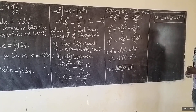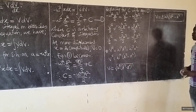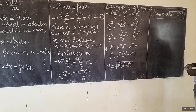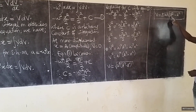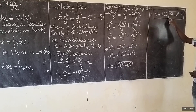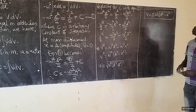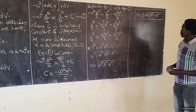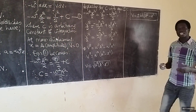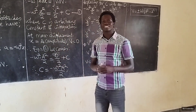Taking the square root of both sides, V becomes plus or minus omega times the square root of A squared minus X squared. This is the relationship between velocity and displacement of a particle or body executing simple harmonic motion, where A is the maximum displacement from the fixed point. Thank you very much, thanks for joining me.